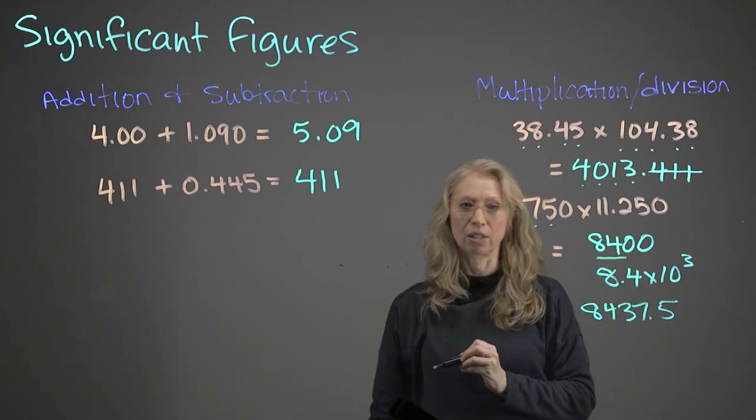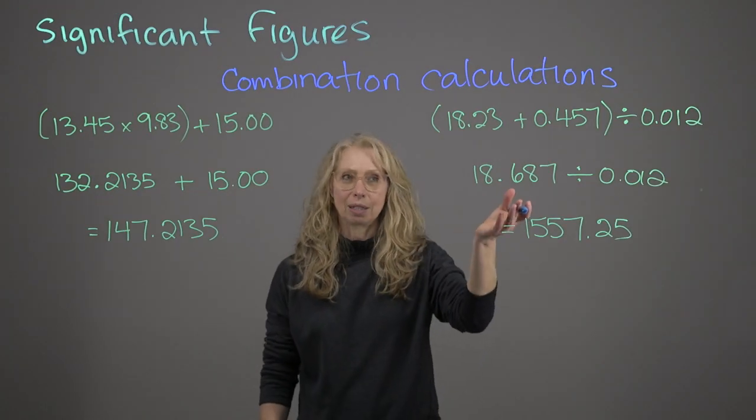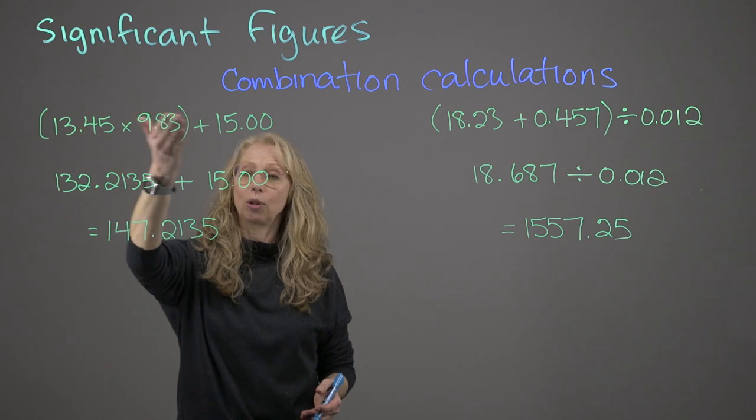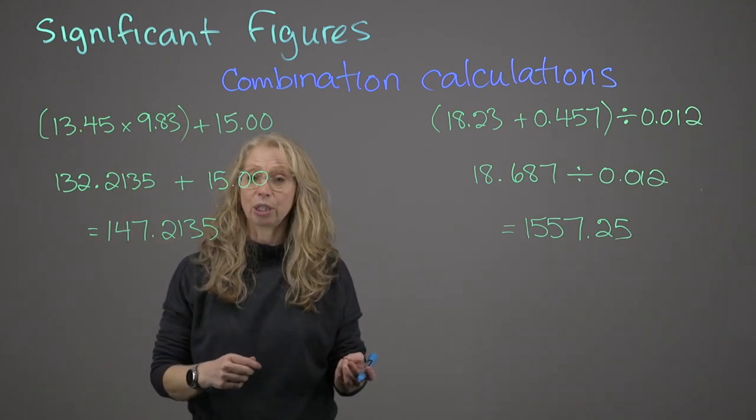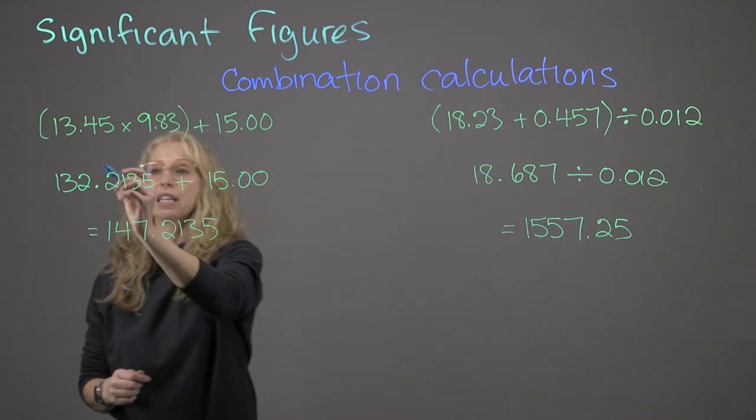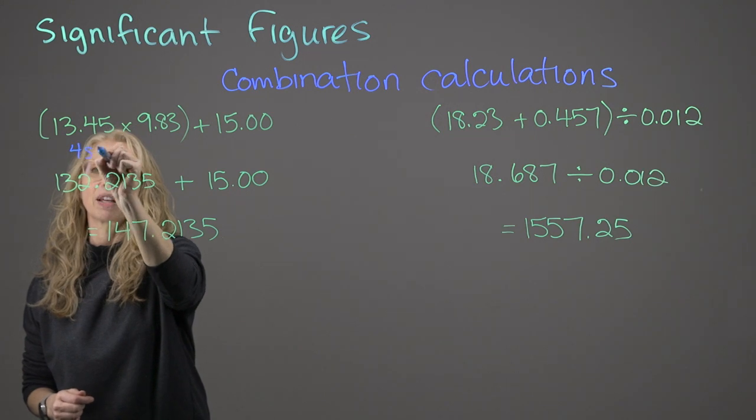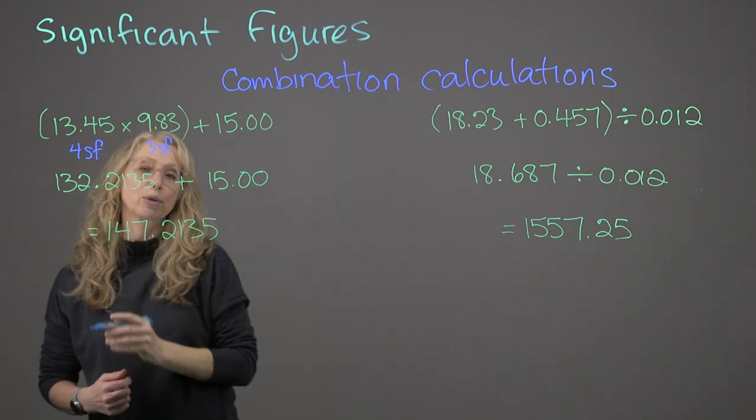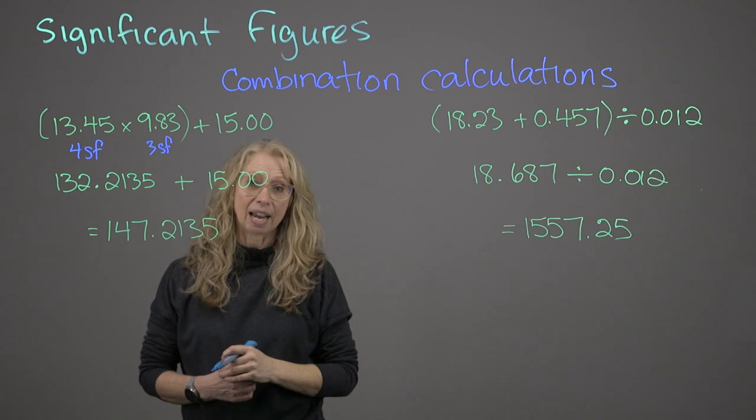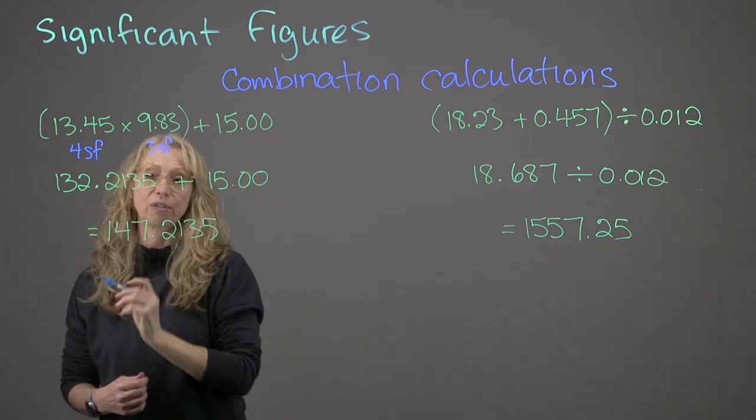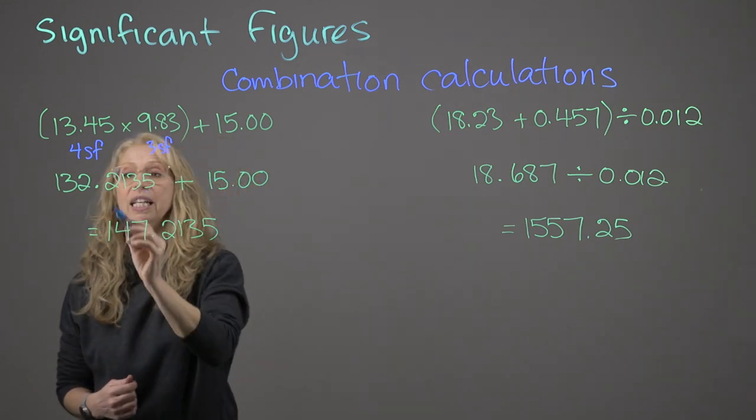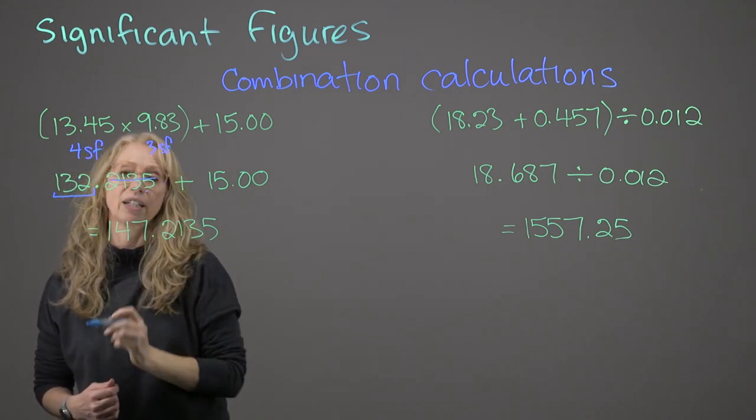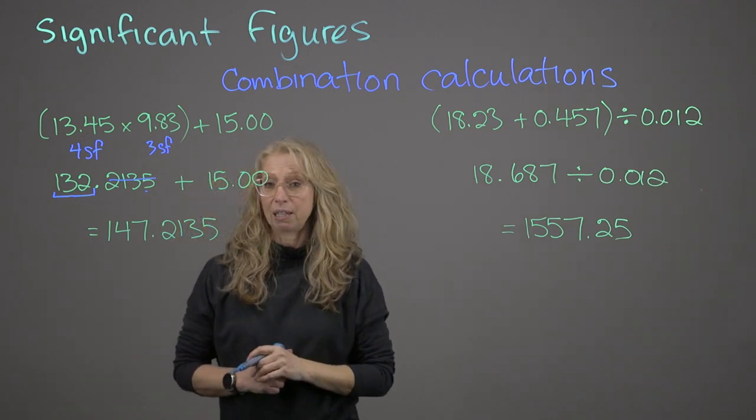So now let's talk about combination calculations. In parenthesis here, we have a multiplication followed by an addition. So if you recall, multiplication and division goes by the least number of sig figs. So if I look at this, 13.45 has 4 significant figures. 9.83, 3 significant figures. If I multiply those two together, my answer has to have no more than 3 significant figures. So here is my answer if I just calculate the entire thing in my calculator. But if I look at my significant figures, it's 132. So we can't factor any of that in.